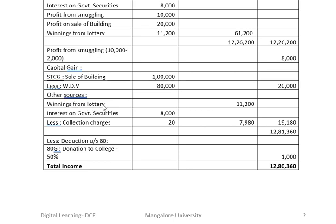Income from other sources: winnings from lottery Rs. 11,200. Interest on government securities Rs. 8,000, less collection charges, comes to Rs. 7,980. Therefore total from other sources is Rs. 19,180. So we get the gross total income of Rs. 12,81,360. Less deductions under Section 80: Section 80G — donation to college, which is a recognized college, deduction at the rate of 50%, so Rs. 1,000. Subtracting this, we get total income of Rs. 12,80,360.